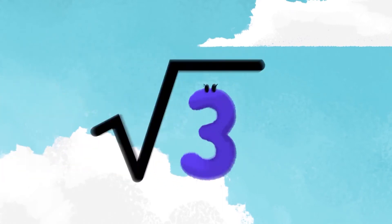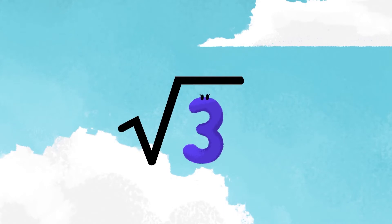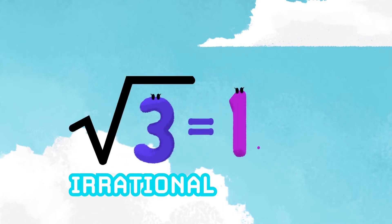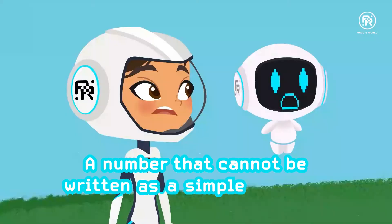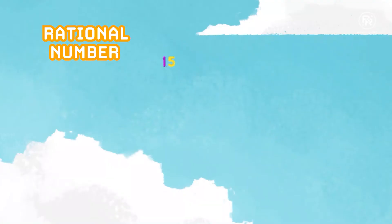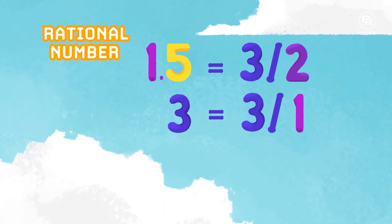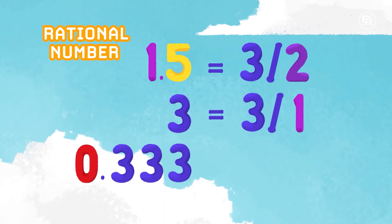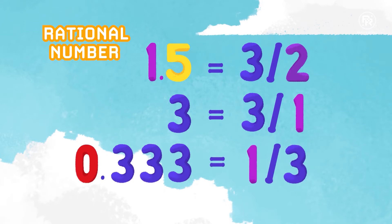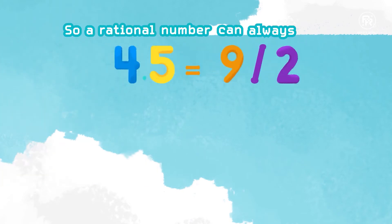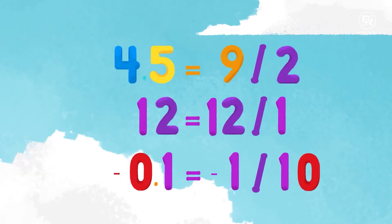Now, if we take the square root of three, we get another kind of special number called an irrational number, which is a number that cannot be written as a simple fraction. For example, 1.5 is a rational number because it can be written as three divided by two. Three is rational because it can be written as three divided by one. Even 0.33333 is rational because it can be written as one divided by three, or one third. So a rational number can always be written as a fraction, and an irrational number can never be written as a fraction.